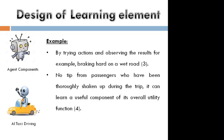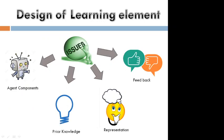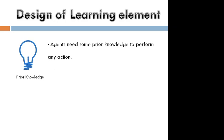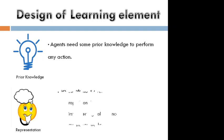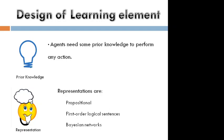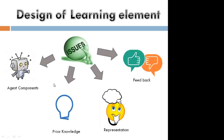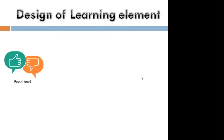The agent needs prior knowledge. The agent needs some prior knowledge — without prior knowledge, taking actions is not possible. Regarding representation: these topics such as propositional representation are already completed. So the four issues for designing the learning element are agent components, prior knowledge, representation, and feedback. Feedback is most important.